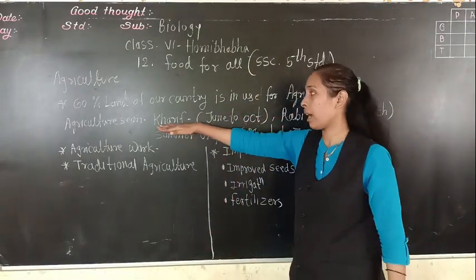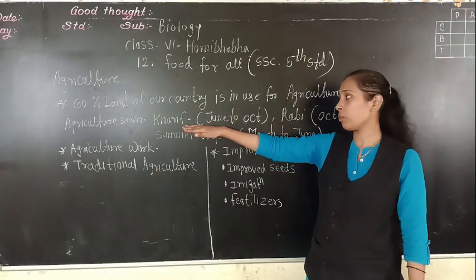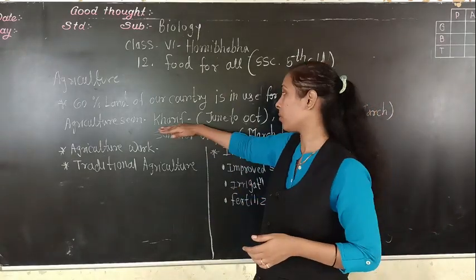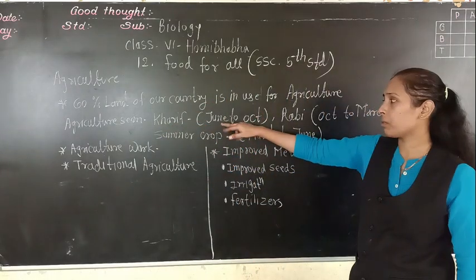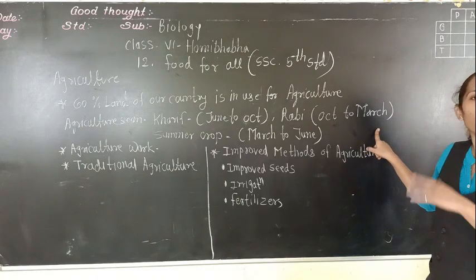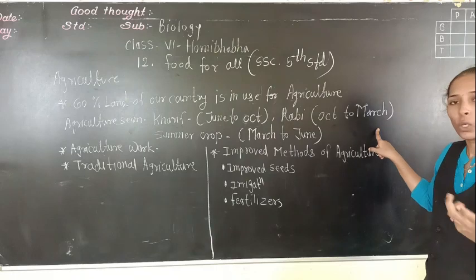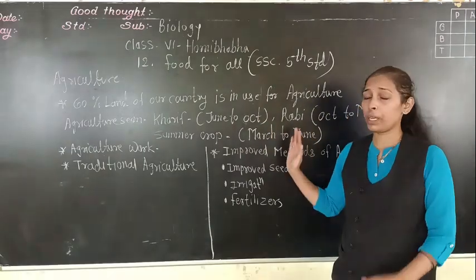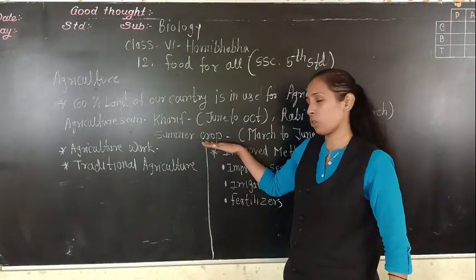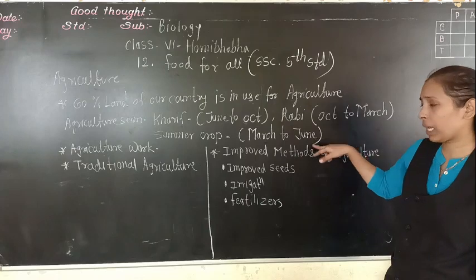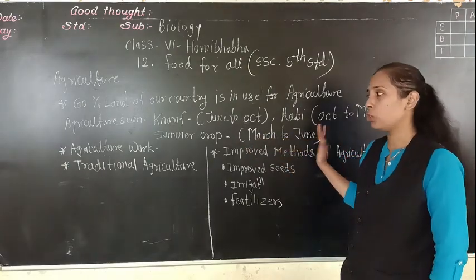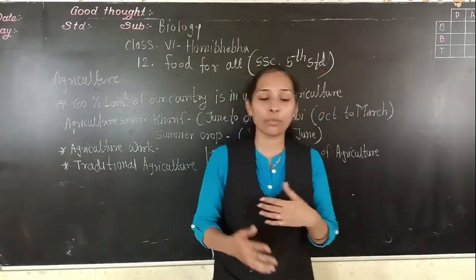Mainly there are two seasons: Kharif and Rabi. The Kharif season is from June to October — crops which grow in the rainy season are called Kharif crops. The Rabi season crops grow from October to March; they do not depend on rainwater for their cultivation. Along with these, there is one more season — the summer season — in which certain crops grow from March to June. For example, watermelon grows in the summer season.